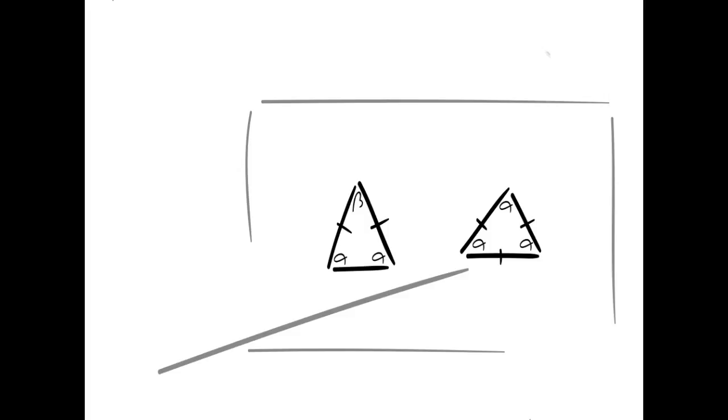An equilateral triangle has all three sides equal. So all three sides are exactly the same length.